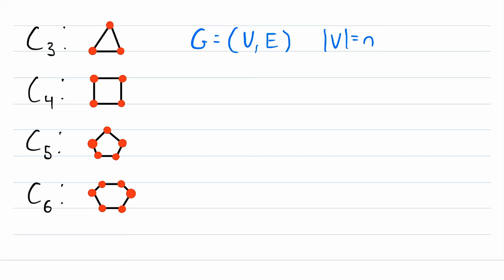Then, G is a cycle graph if, and only if, we can label its vertices v1 through vn, such that the edge set of G is given by the union of these two sets. Now let me explain what's going on with this edge set here.